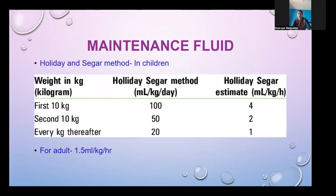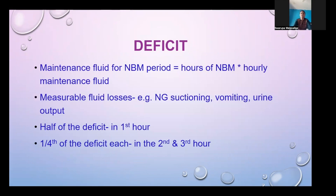For maintenance fluid in children, the Holliday-Segar method is used: for the first 10 kg, give 4 ml/kg/hour; for the second 10 kg (10–20 kg), give 2 ml/kg/hour; and for every kg thereafter, 1 ml/kg/hour. For adults, it is 1.5 ml/kg/hour.